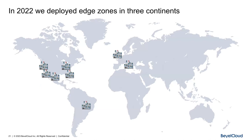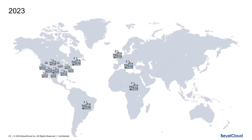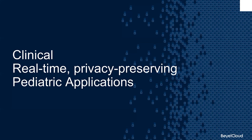In 2022, we deployed edge zones in three continents — including Bambino Gesù in Rome and Children's Hospital Orange County. In 2023, we're already planning a deployment into Gertrude's Children's in Africa and then into about 20 other hospitals in the United States.